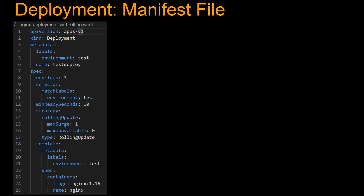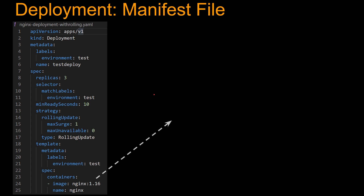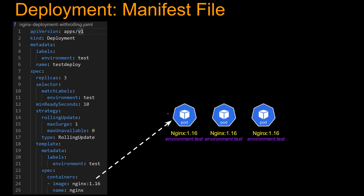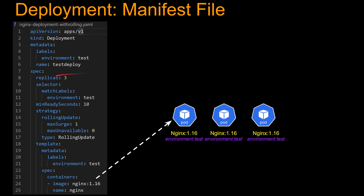Let's take a look at this with an actual example. On the left we have the deployment manifest file. Let's start from the bottom at the pod level. Under template, we have the spec and the container image is Nginx version 1.16. It is going to create a pod with Nginx 1.16 and put a label for these pods of environment colon test. Why are there three copies of the pod? Because replicas is set to three.